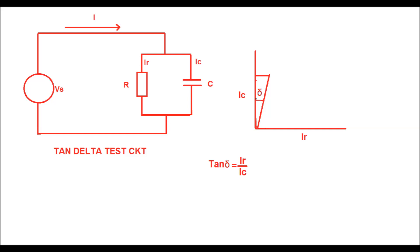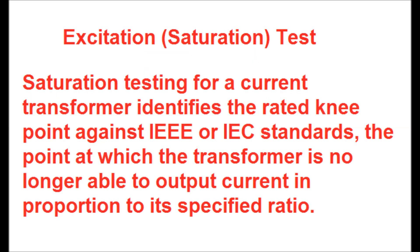Next, the saturation test or excitation test is carried out on the CT. Saturation testing for a current transformer identifies the rated knee point voltage against IEEE or IEC standards — it is the point at which the transformer is no longer able to output current in proportion to its specified ratio. At knee point voltage, the primary current will increase but there will be no increase in the secondary current. During a fault condition, if the fault current is such that the knee point voltage is achieved on the secondary side, there will be no reflection of this fault current in the secondary.